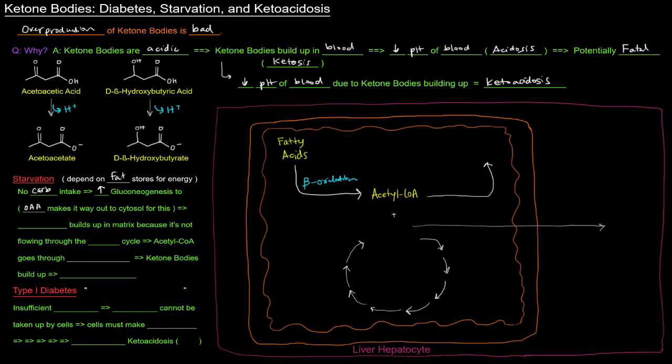So here, we've got oxaloacetate, and it's going to make its way out of the mitochondrial matrix into the cytosol via malate. It's going to go as malate. It's not going to go as oxaloacetate. And it's going to go out into the cytosol to basically make glucose via gluconeogenesis.